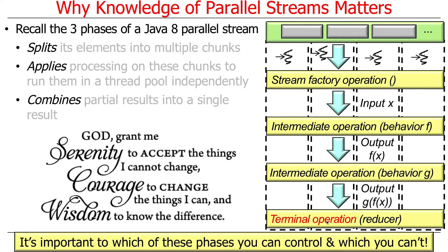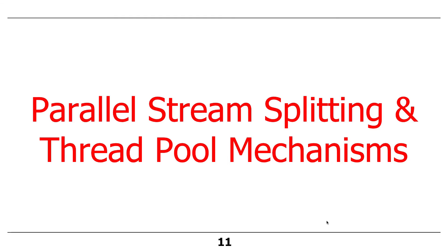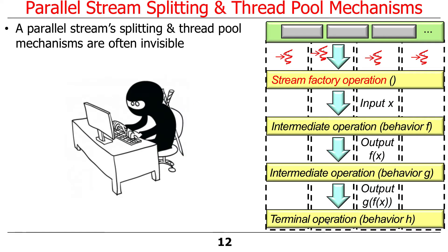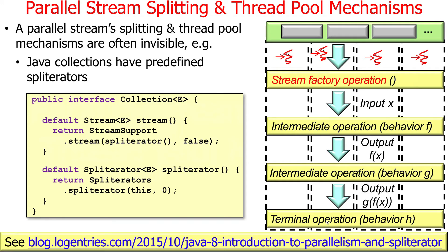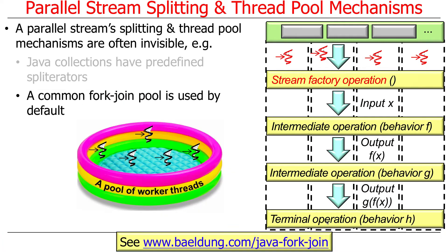The important thing to know is what you can do to make changes and what you can't. Some things you can control, some things you can't. Splitting and the thread pool mechanisms used to run the chunks are largely invisible to you — they're like ninjas. Java collections have a bunch of predefined spliterators; pretty much anything that's a Java collection out of the box has one. You also get the fork-join pool out of the box, so that doesn't require any modifications on your part.